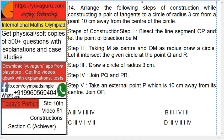Arrange the following steps of construction while constructing a pair of tangents to a circle of radius 3 cm from a point 10 cm away from the center of the circle. First, understand what we have to do. This is a circle of 3. Then 10 cm away from a point, and we have to draw tangents from this point to the circle.